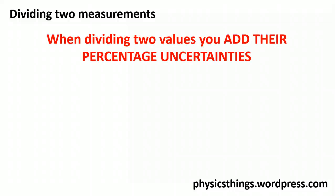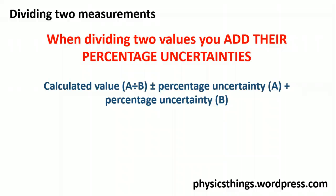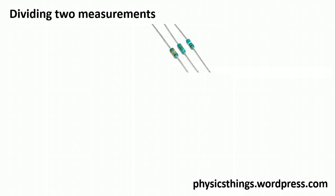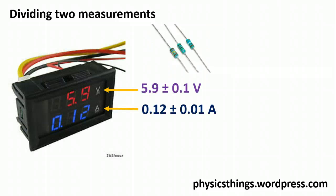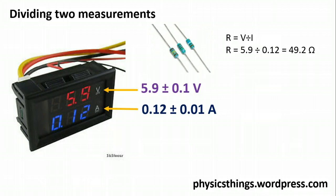When we divide two measurements we do exactly the same thing — you add their percentage uncertainties. You don't need to know why, though a proof will be on the website. A classic example is resistance: using a voltmeter and ammeter, the equation is R = V/I. Plugging in our numbers gives a resistance of 49.2 Ω. Note that despite the current being to two decimal places, because our voltage is only to one decimal place, we round to one decimal place.